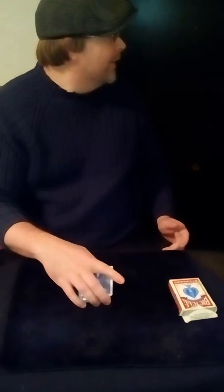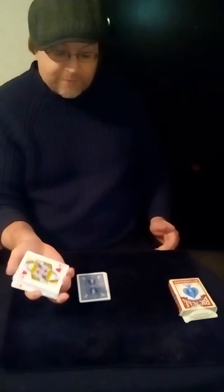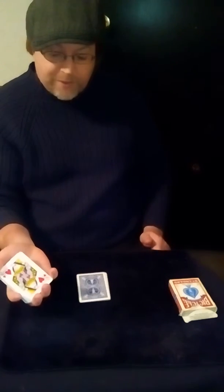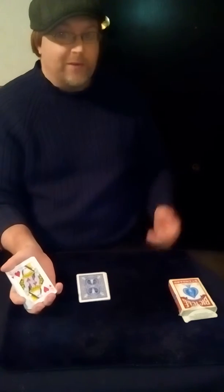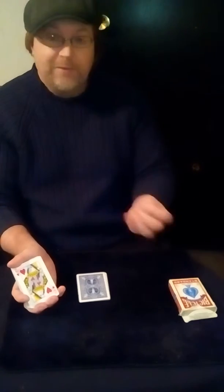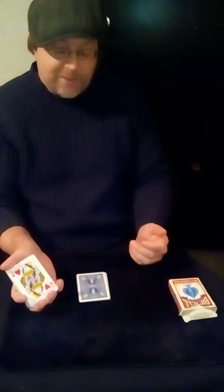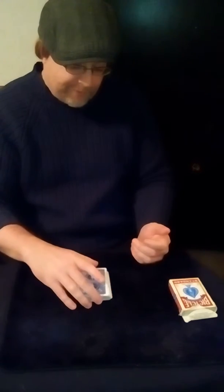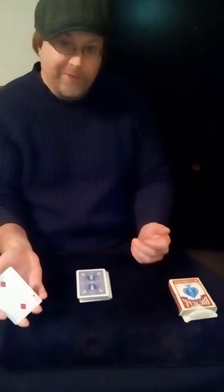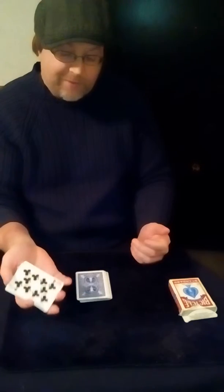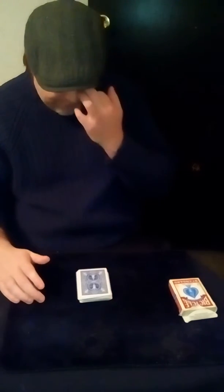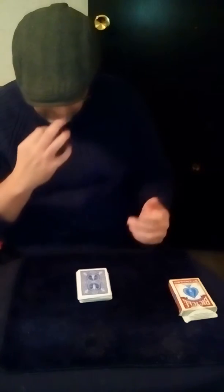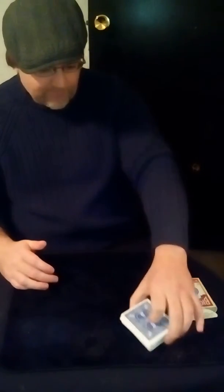I cut to the Queen. Now the Queen is in the twelfth position. If you go ace, two, three, four, five, six, seven, eight, nine, ten, jack, Queen, King. I could have easily cut to something else. I could have cut to the second position or the tenth position, but I cut to the twelfth position of the card. I had no idea where I was going to cut to.